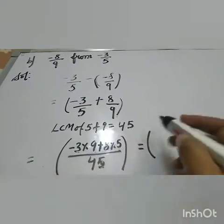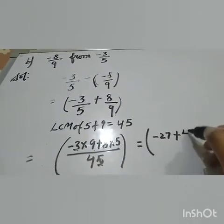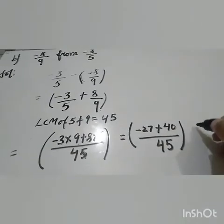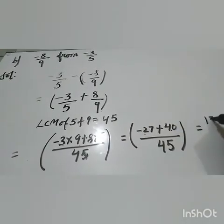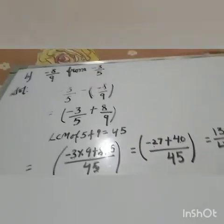3 nines are 27 plus 8 fives are 40 divided by 45. Now 40 minus 27, which equals 13 by 45. This is the answer.